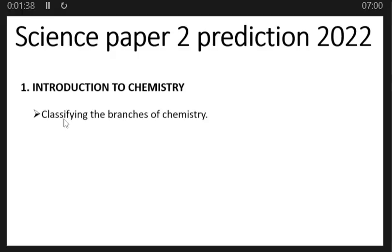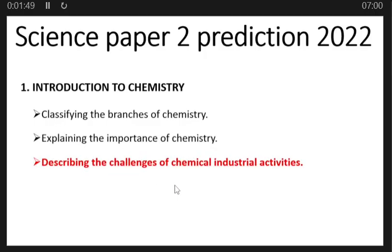Let's start with it. Topic number one is introduction to chemistry. Under introduction to chemistry, there might be a question on classifying the branches of chemistry, explaining the importance of chemistry, and describing the challenges of chemical industrial activities.